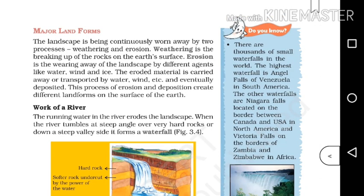Major landforms. The landscape is being continuously worn away by two processes: weathering and erosion. Weathering is the breaking up of rocks on the earth's surface.